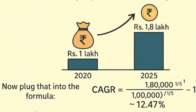Let's take an example. In 2020 you invested 1 lakh rupees; in 2025 it grows to 1.8 lakh rupees — a jump of 80,000 rupees in five years. Plug that into the formula: CAGR = (1,80,000 ÷ 1,00,000) raised to the power of 1/5, minus 1. That gives approximately 12.47%, so your investment grew at an average of 12.47% every year.